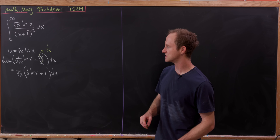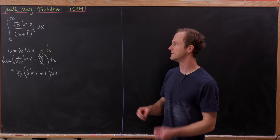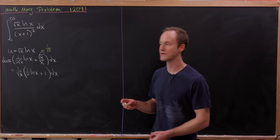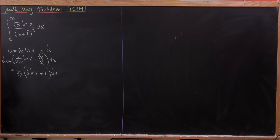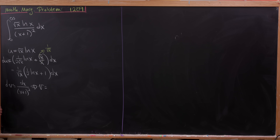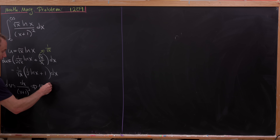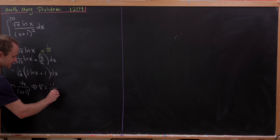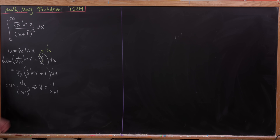If that's our du component, then our dv component will be everything left over once we've made the substitution for u. That means dv = dx/(x+1)², meaning that v = −1/(x+1). We can verify this using the fact that this is really −1 times (x+1)^(−1), and taking the derivative gives back the dv term.